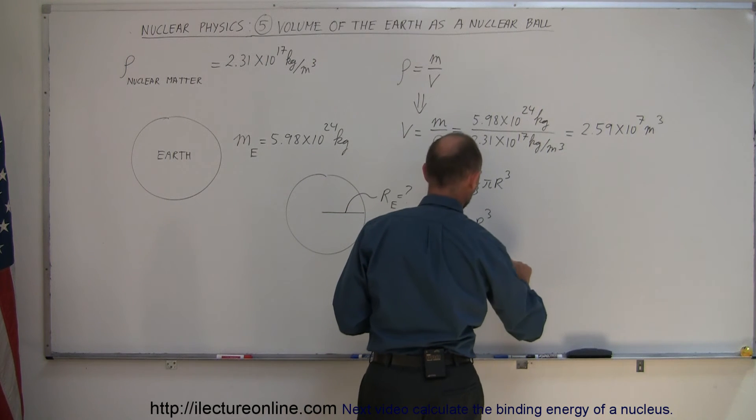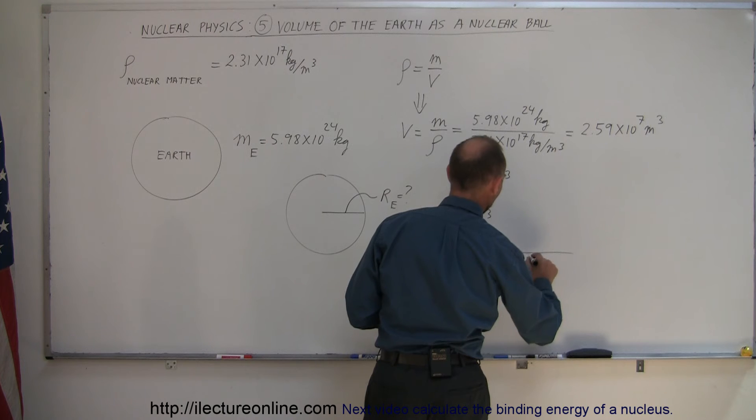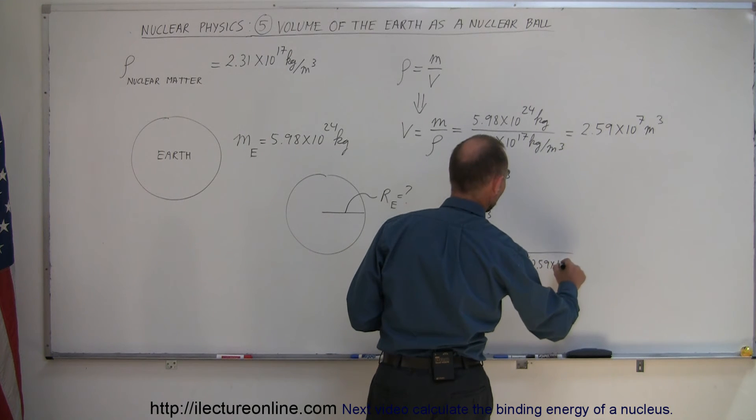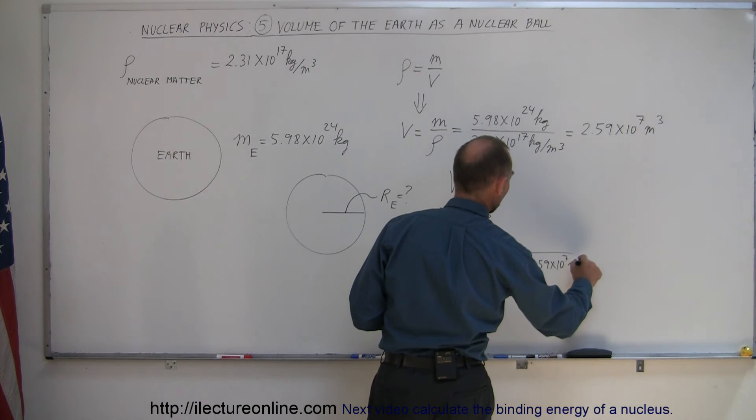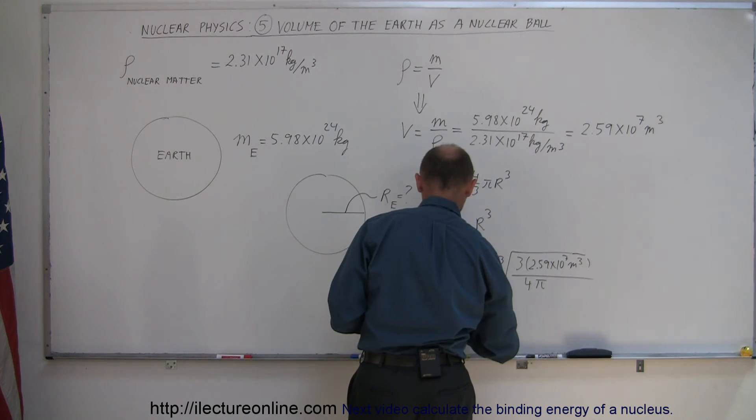Let's do that. So the cube root of 3 times the volume that we just found, 2.59 times 10 to the 7th meters cubed, and divide that by 4 pi. And then we get, of course, the radius in meters.